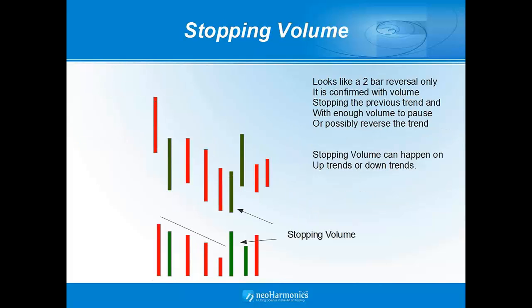The next item is stopping volume. Stopping volume can many times look like a two-bar reversal, where you have a bar coming down in the direction of the trend, which is going down. The stopping volume is a combination of enough volume being able to push price back up into that bar, plus closing at the top third or at the top of that bar.